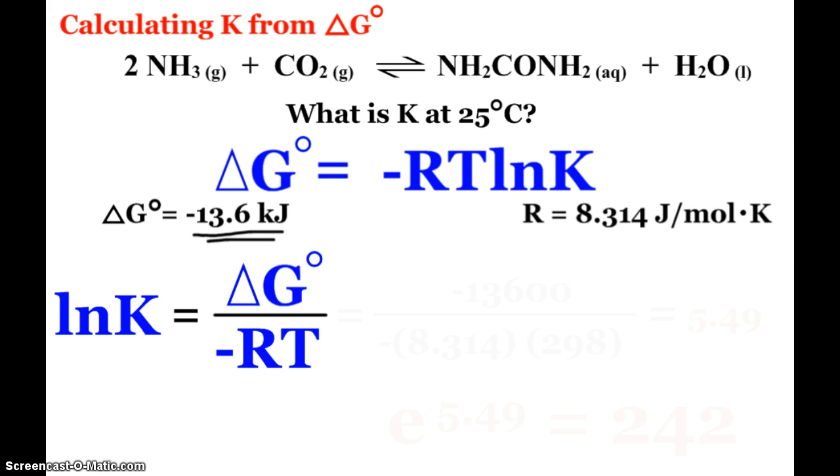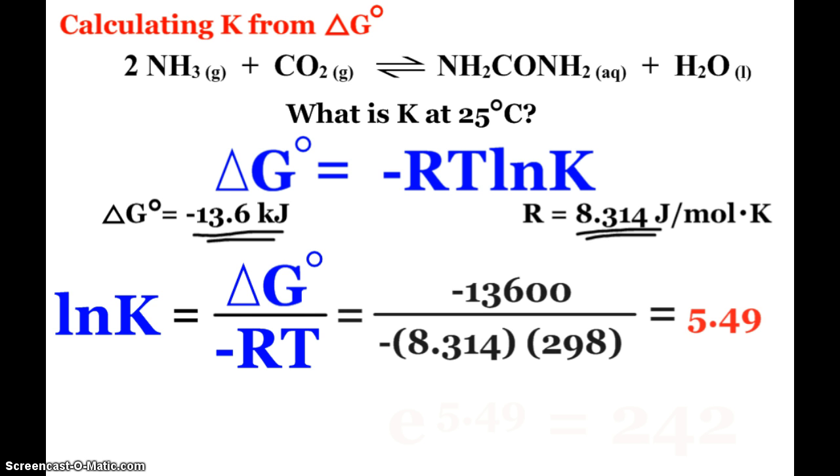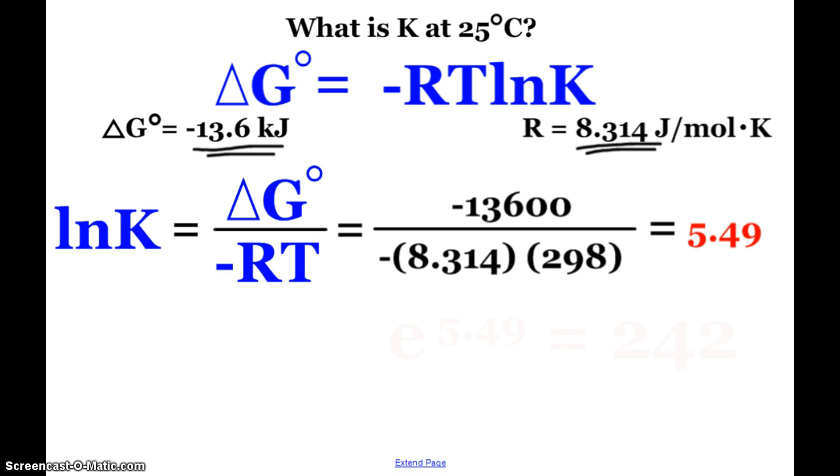R again is in our AP packet 8.314 joules per mole kelvin. So we have to be careful here, kilojoules joules. So when we plug into our equation the natural log of K is equal to negative 13,600 joules divided by negative RT. Now I get 5.49. Is that my equilibrium constant? No, that's the natural log of.